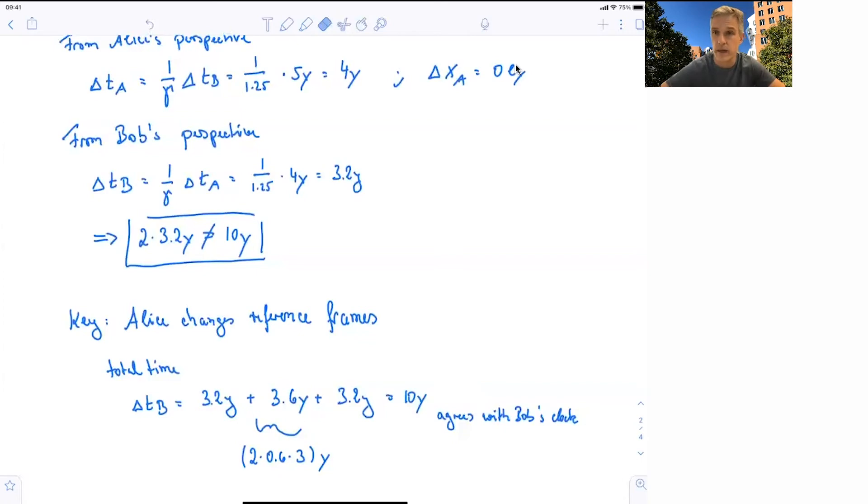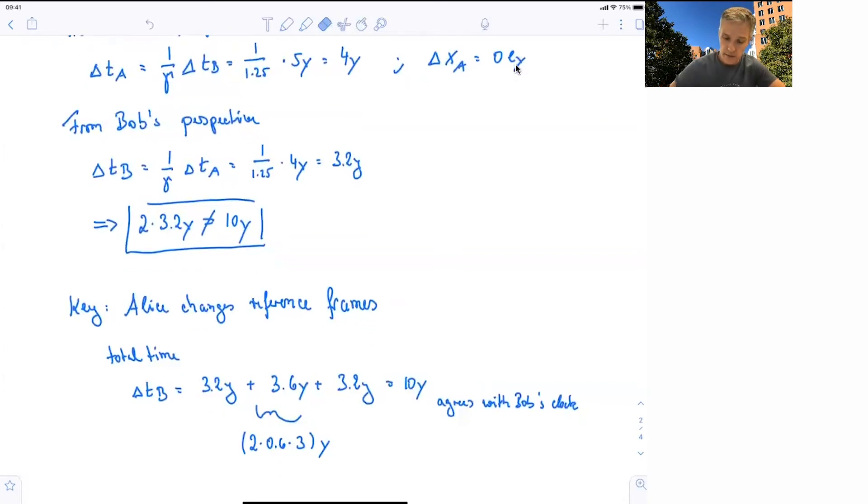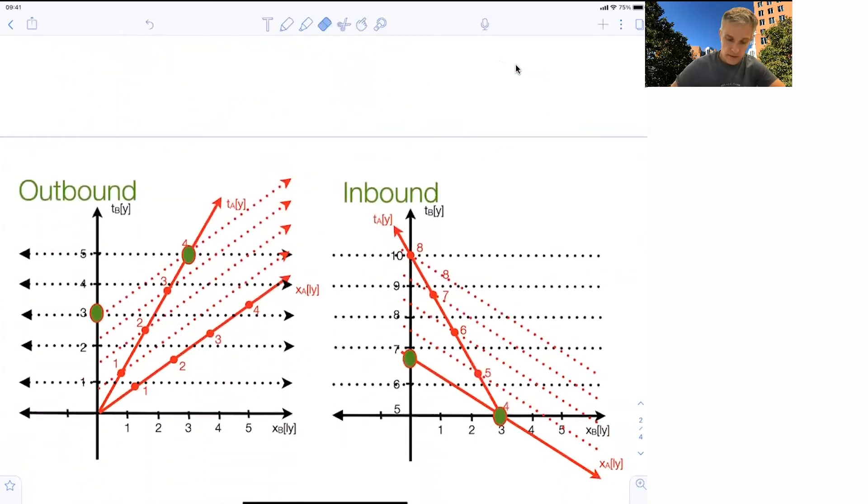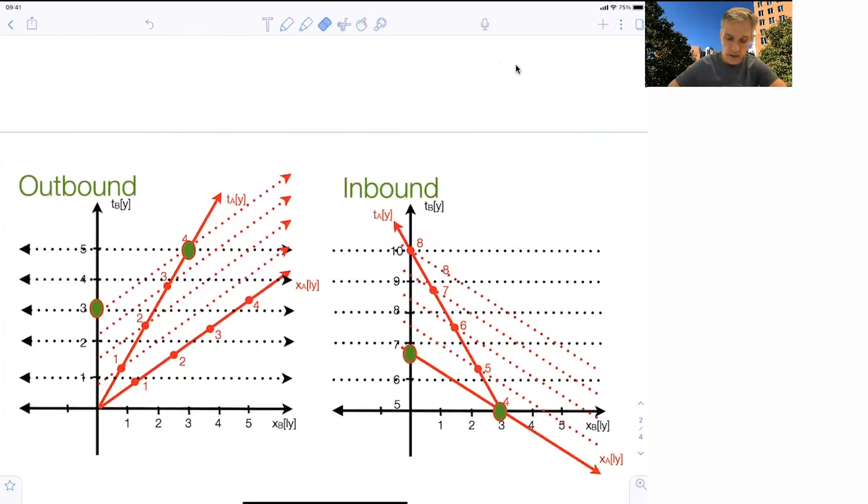Alright. So we saved the day here. So let's look at space-time diagrams. The outbound journey is shown here. You see, I plotted in addition to Bob's reference frame, I plotted Alice's reference. And it makes it easier to understand what's going on.